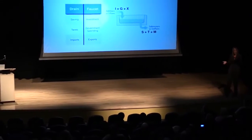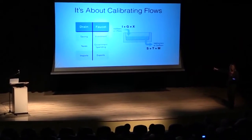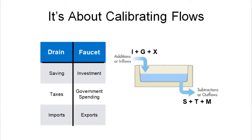So what you have are these two flows: water coming in and water going out. The question is which is bigger — are the leakages bigger than the injections? Because if they are, the water level in the tub is going to go down. If you pull the drain on your bathtub and set the water to a trickle, it's going to go right down the drain. If you put water in faster than you're taking it out, the water level is going to go up. So the question is: how do we calibrate these flows so the water level hits the full employment mark? Not below, because we get unemployment, and not above, because we risk inflation. That's the trick.